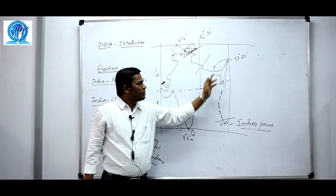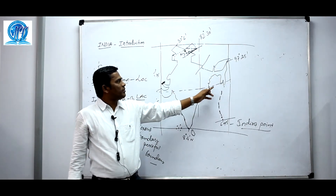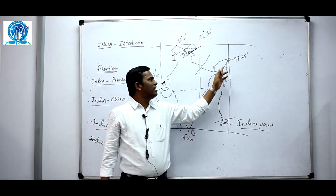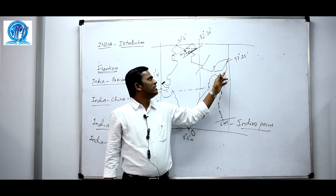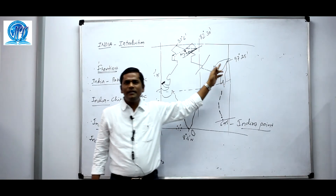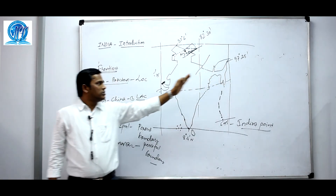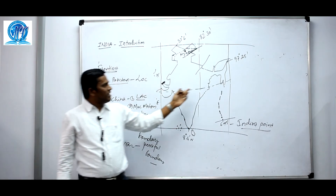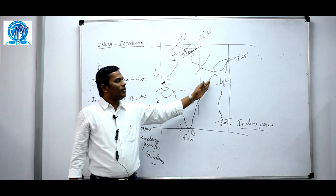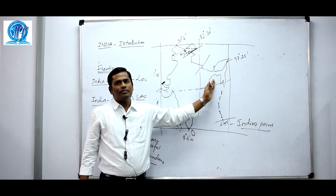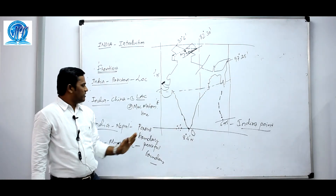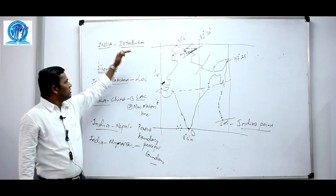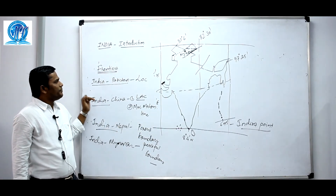The India-Myanmar boundary is a peaceful boundary. It starts from Mizoram, Manipur, and Nagaland on the Indian side, and Naga Hills, Chin Hills, and Kachin States on the Myanmar side. The India-Bangladesh boundary was established through the Radcliffe Award in 1947, when Bangladesh was earlier known as East Pakistan.